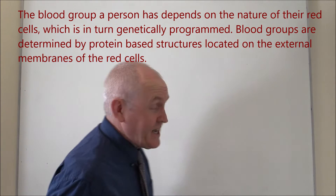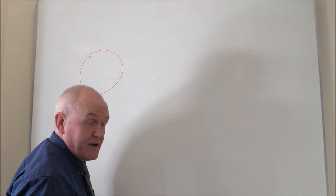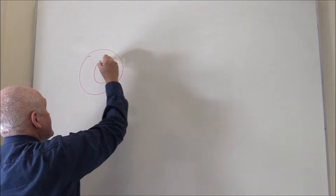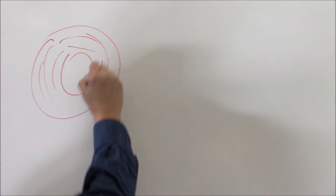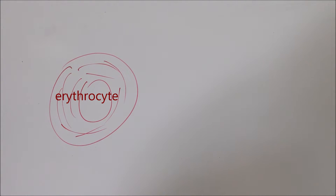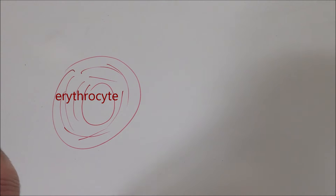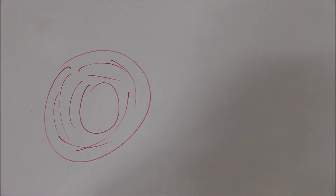So let's think about a red cell. Here we have one here. As you know, they're biconcave discs — darker area on the outside and lighter area on the inside because the inside is thinner. Now on these red cells there are substances on the outside called glycolipids, and it's these glycolipids that act as the antigens.